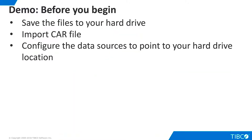Before you begin this demo, you will need to get the files that are used as data sources and save them to your hard drive. You can then import the CAR file for this demo and configure the data sources to point to the locations where you have stored the files. The CAR file contains all of the views used in the demo. You may use these pre-built views or build your own from scratch. All of these assets, as well as instructions for these steps, can be found in the Additional Resources folder that accompanies this demo.